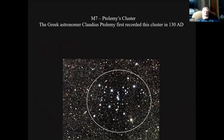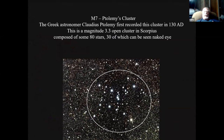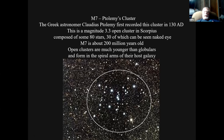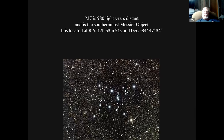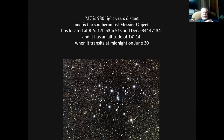That's Ptolemy's cluster — the Greeks first recorded this cluster in 130 AD. It's a magnitude 3.3 open cluster of 80 stars, 30 of which can be seen with the naked eye. M7 is about 200 million years old. Open clusters are much younger than globulars and form in the spiral arms of their host galaxy. It's 980 light years from us, and I didn't know this — it's the southernmost Messier object.